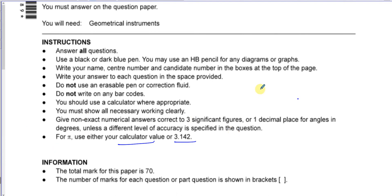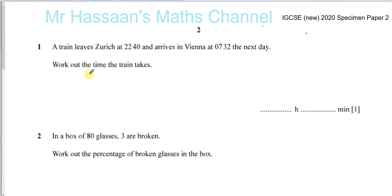So let's just get started with question number one. Question number one: a train leaves Zurich at 22:40 and arrives in Vienna at 07:32 the next day. Work out the time that the train takes. Now, a question like this, you've got a 24-hour clock.